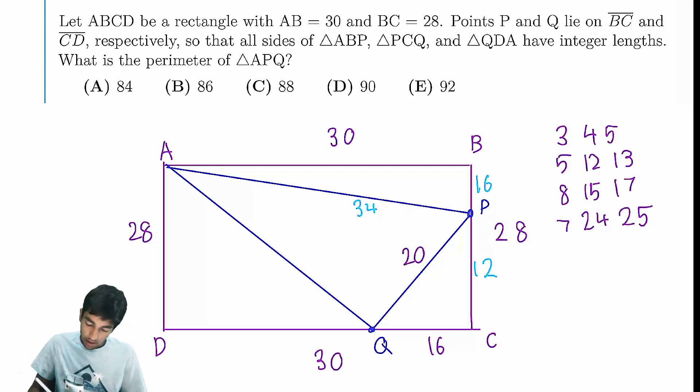This is again 3-4-5. Then DQ becomes 14. But there isn't a Pythagorean triple with 14 and 28. That would make this 14 root 5. That cannot be right.